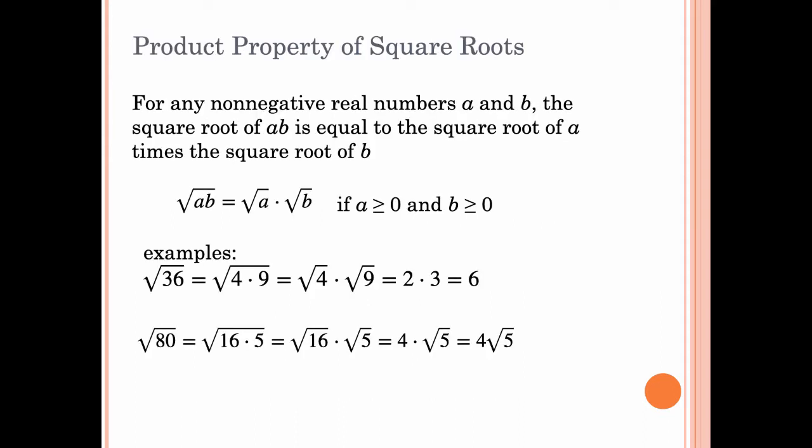The product property of square roots states: for any non-negative real numbers A and B, the square root of AB equals the square root of A times the square root of B, where A ≥ 0 and B ≥ 0. We are only going to be taking square roots of positive numbers — not the imaginary number system. All we are dealing with this year is the real number system.